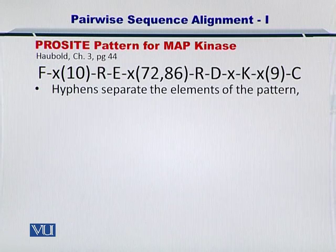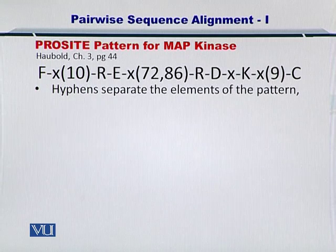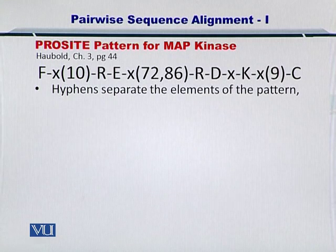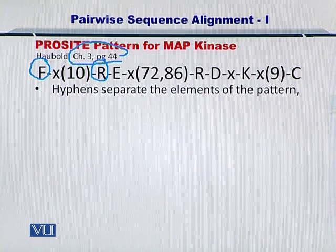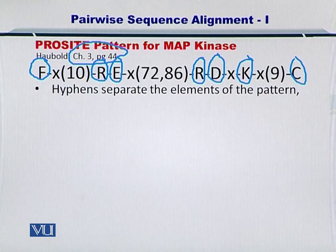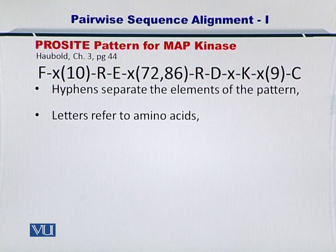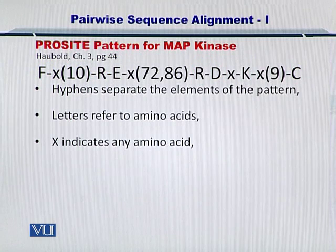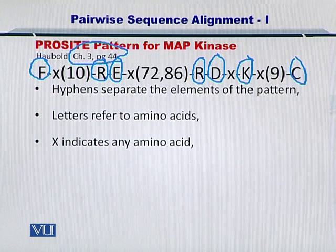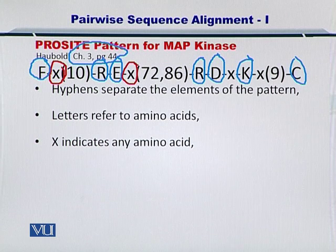Let's take a look at the ProSite patterns again. ProSite patterns allow you to build templates for inexact matching. This is from your textbook chapter 3, page 44. These are the amino acids as you already know. X represents any amino acid from the 20 amino acids. Essentially when you have an X anywhere in the ProSite pattern, it means you can place any amino acid there.